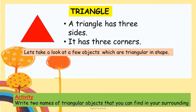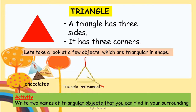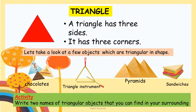Triangle: A triangle has three sides, children. It has three corners too. Let's take a look at a few objects which are triangular in shape: chocolates, triangle instruments, pyramids, and sandwiches. Now do the following activity — write two names of triangular objects that you can find in your surroundings.